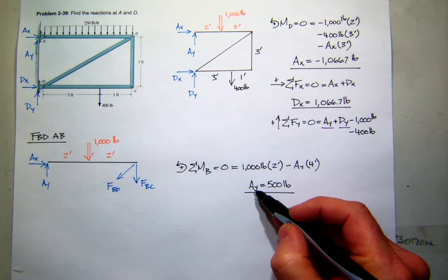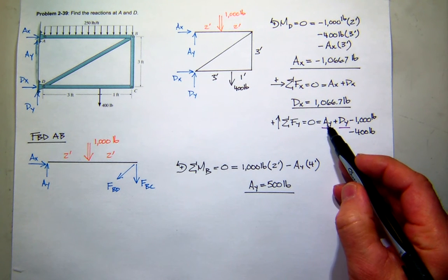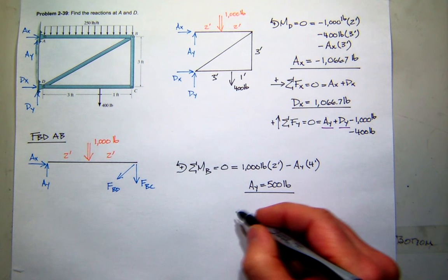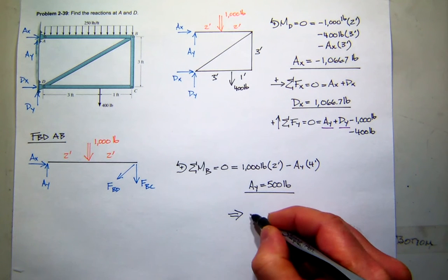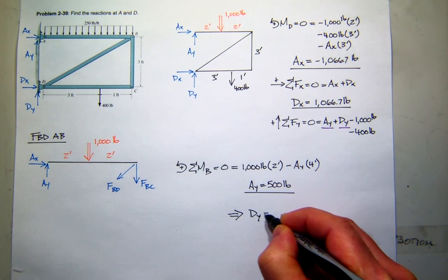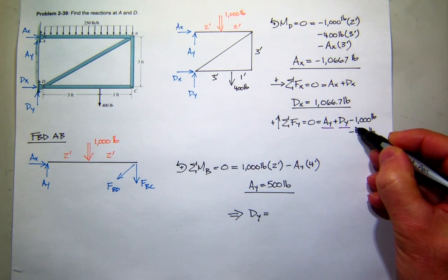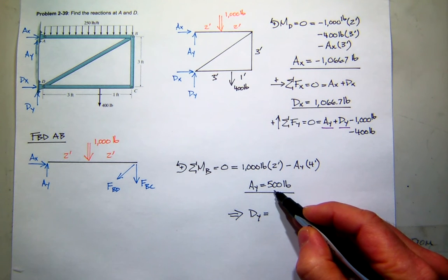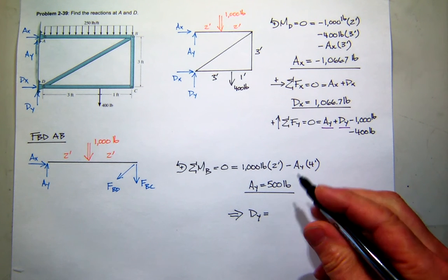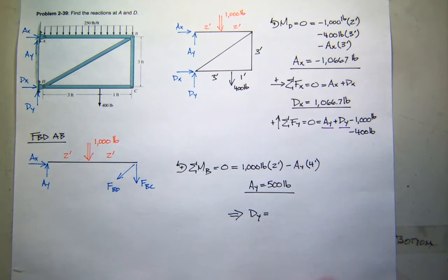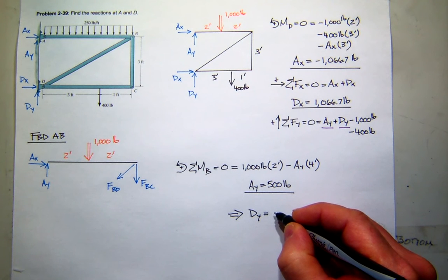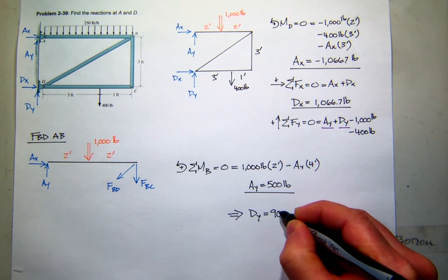And of course, now that I have Ay, I can stick it in here. So that implies that Dy is going to be equal to what? Well, I've got 1,400 pounds negative. If I subtract 500, I should be left with 900. Is that right? So Dy is 900 pounds.